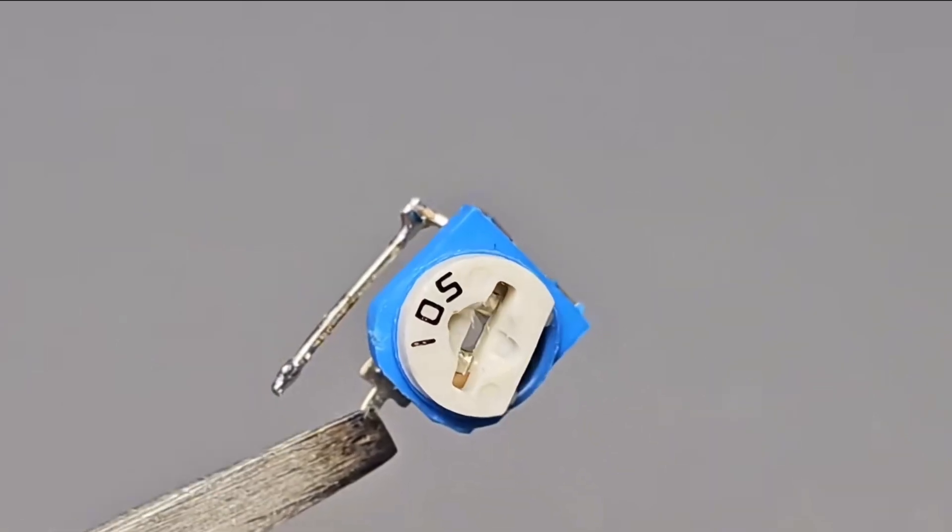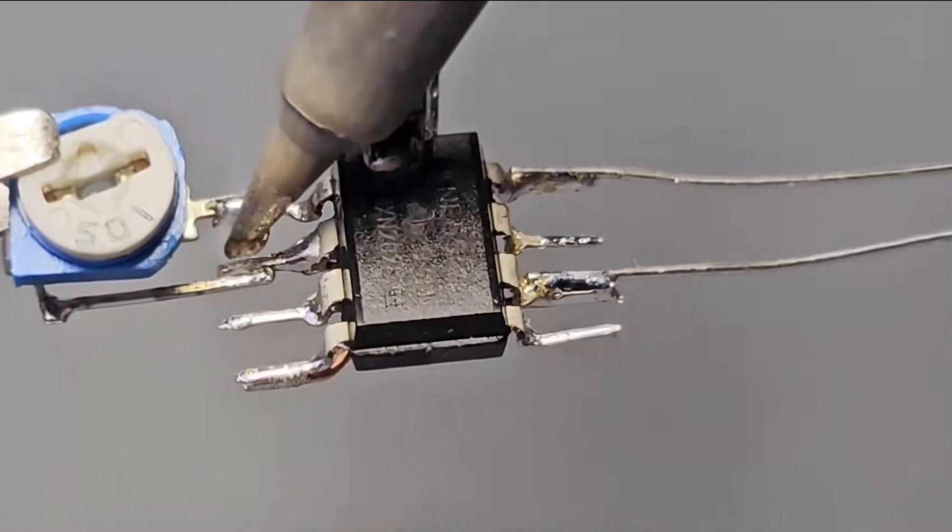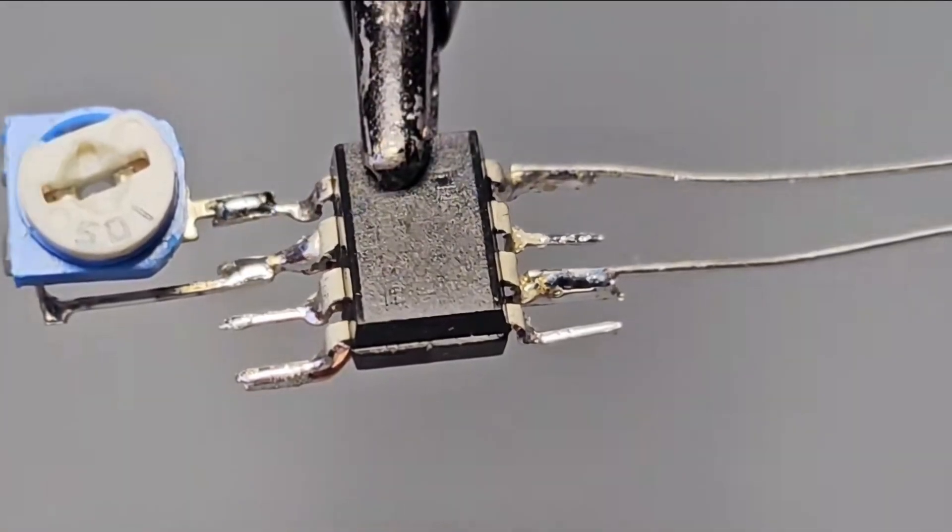Take a 1-meg potentiometer and connect it to the ground terminal of the chip and trigger terminal to adjust the circuit sensitivity.